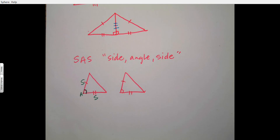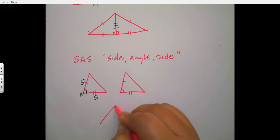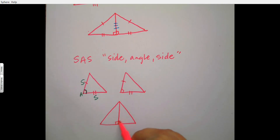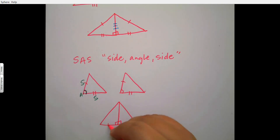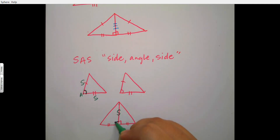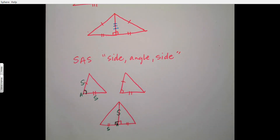SAS can also have a tricky hidden version. The triangles share a side, and you'll only see certain markings. There's a side they share, then through the middle there are angle markings shown as squares, and then a side on the bottom — so it's side-angle-side.